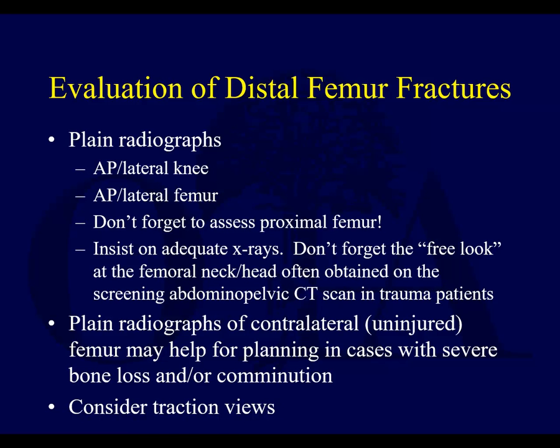Look at your plain radiographs — AP, lateral — make sure you don't miss something proximally, and insist on adequate x-rays. Don't forget to check a CT scan; many patients nowadays get a CT of their abdomen and pelvis, which gives a free look at the femoral neck to make sure you don't miss something else. Plain radiographs of the contralateral femur can help for pre-op planning if you have severe comminution and can't recognize what length and normal anatomy should look like. Traction views are potentially helpful if you have severe shortening, as ligamentotaxis helps approximate where the major fragments lie.